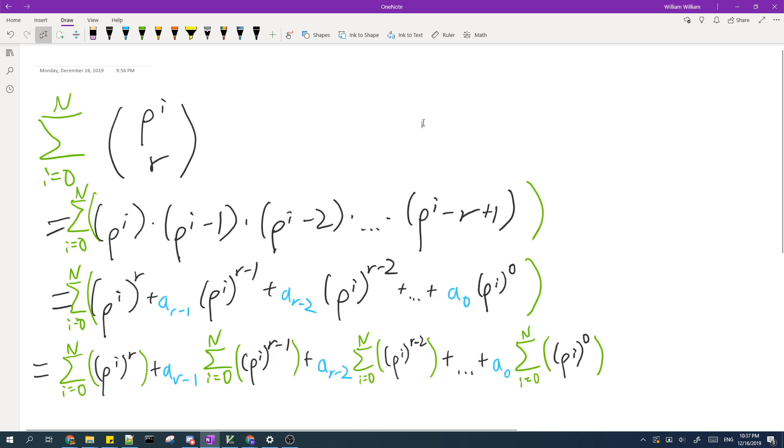This expansion is useful because when we take the sum of this binomial coefficient we are also taking the sum of this product, which is the sum of this polynomial. And then we can split the sum into each of these terms.